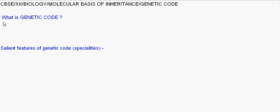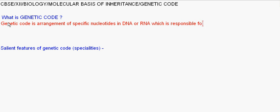What is genetic code? Genetic code is arrangement of specific nucleotides in DNA or RNA which is responsible for synthesis and arrangement of amino acids during protein synthesis.